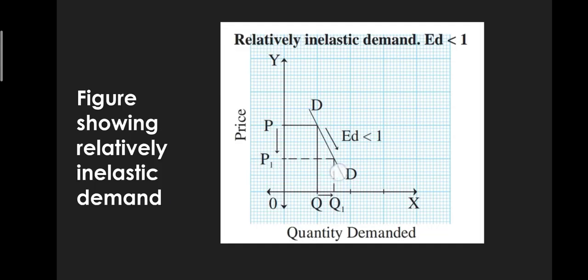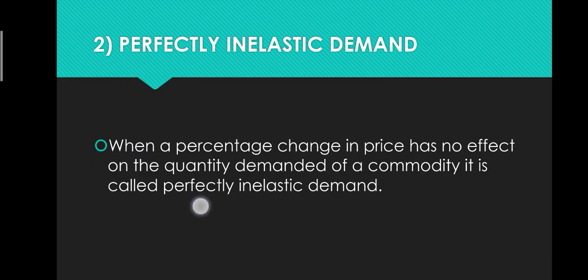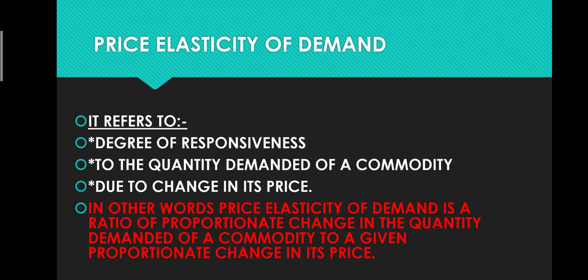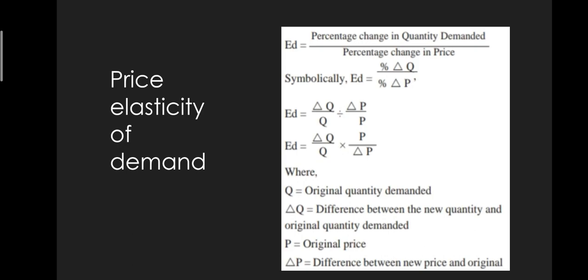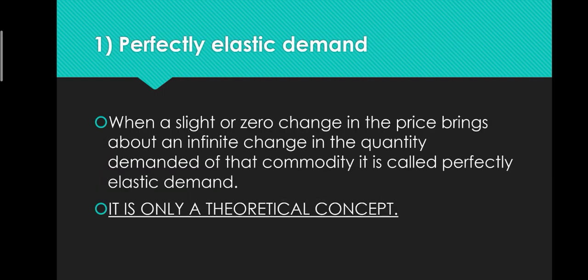Let us go back to the topic once again. We have covered price elasticity of demand: its meaning — degree of responsiveness of quantity demanded of a commodity due to change in its price — and the formula: Ed = percentage change in quantity demanded / percentage change in price. There are 5 types of price elasticity of demand. The first is perfectly elastic demand, which is only a theoretical concept. In practice it is not possible. When a slight or zero change in price brings about an infinite change in quantity demanded, it is called perfectly elastic demand.